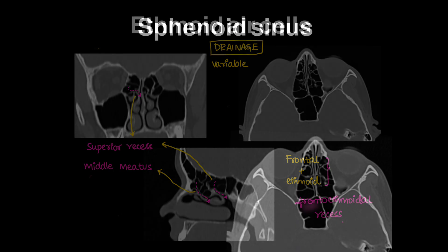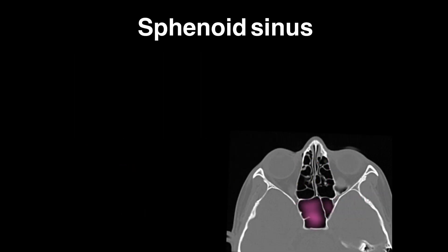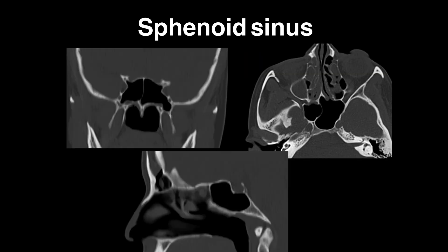Coming to the last sinus — the sphenoid sinus — it is the posterior-most sinus, located in the body of the sphenoid bone. It has two to three spaces separated by an intra-sinus septum, but is still considered as one sphenoid sinus entity. On the coronal and sagittal sections, the superior margin of bone is called the planum sphenoidale.